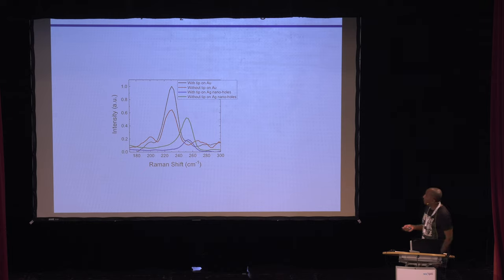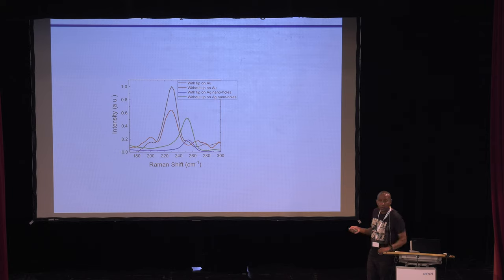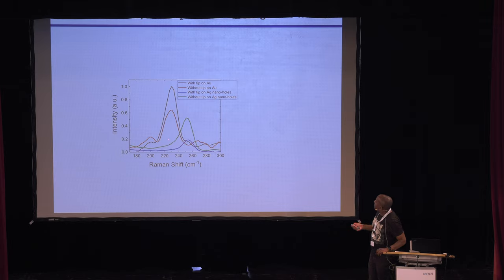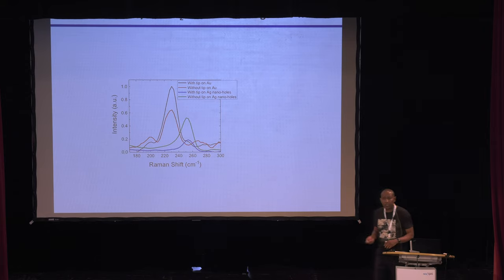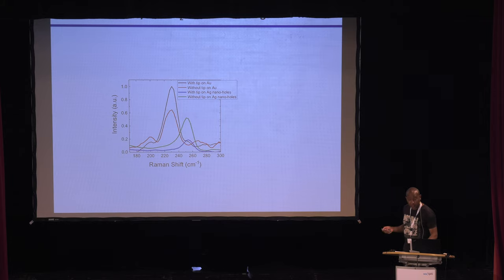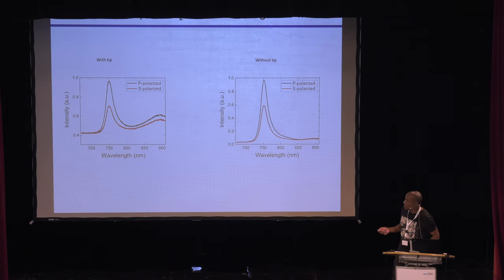One strange thing we're still trying to understand: this is a TERS image on monolayer WSE2 on gold nanoholes, which are plasmonic, with P-polarized laser. You can see the huge difference between the gold TERS and that of the TERS we find when we exfoliate a monolayer on these nanoholes. I'm not sure yet what's going on — it seems that maybe strain issues on the nanoholes shift these Raman peaks. Again, this is a work in progress.